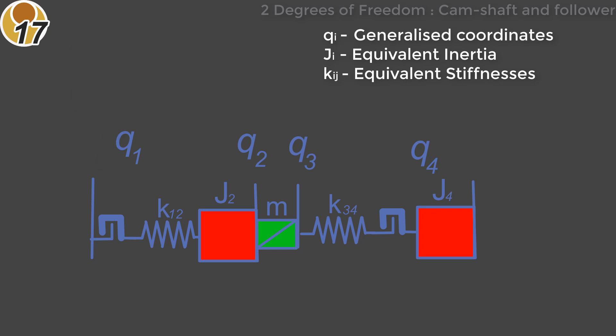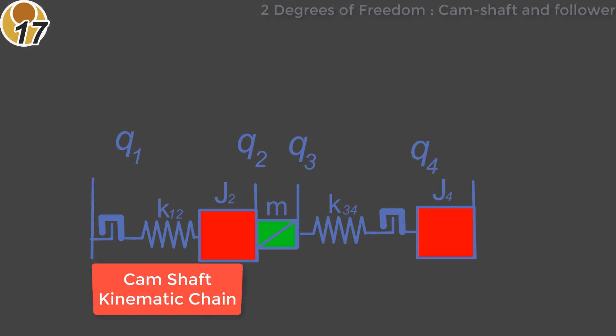In Mech Designer, we associate each kinematic chain with a degree of vibrational freedom. So with a simple CAM, we can reduce the system to two degrees of vibrational freedom. The first represents the CAM shaft and CAM, and the second the follower system.